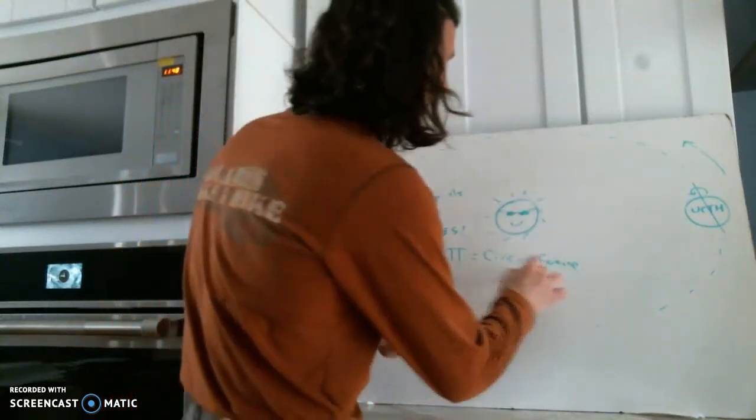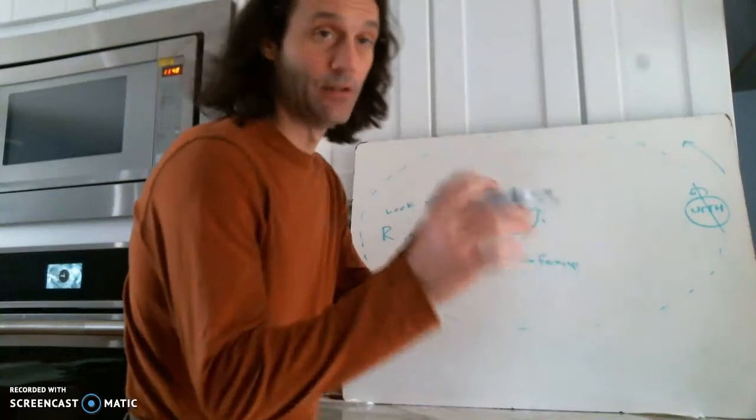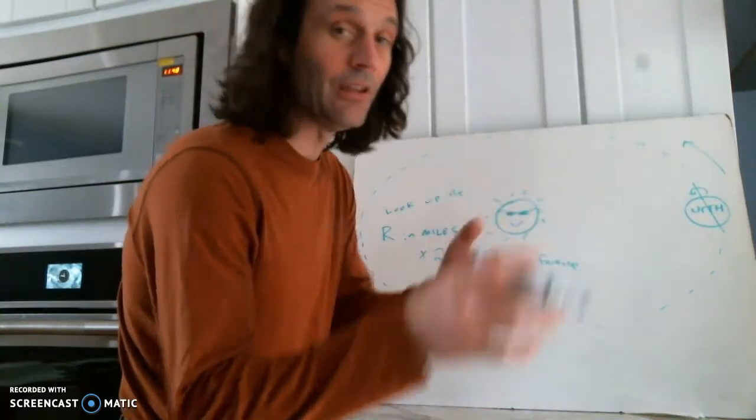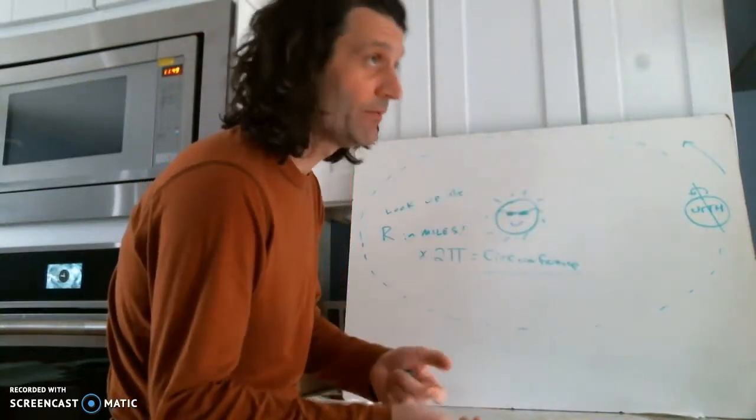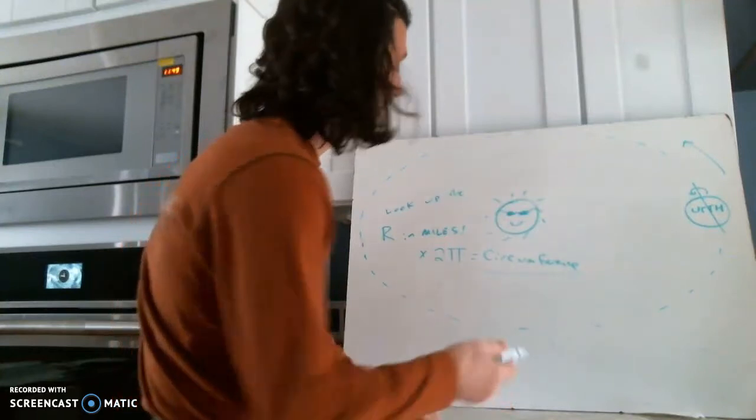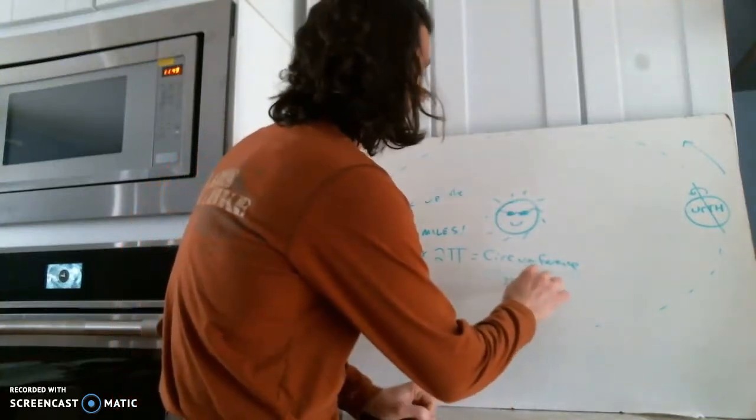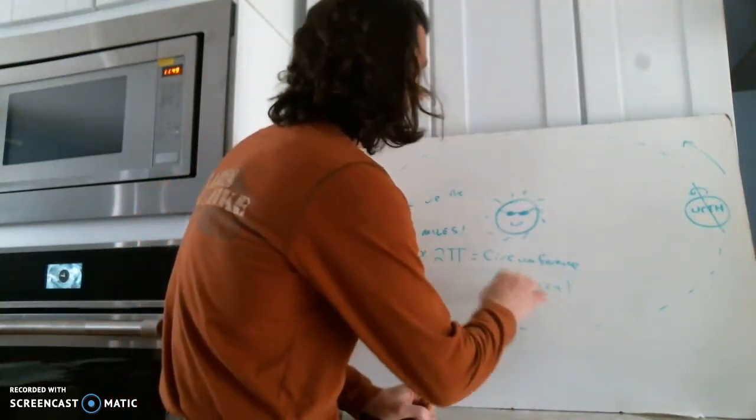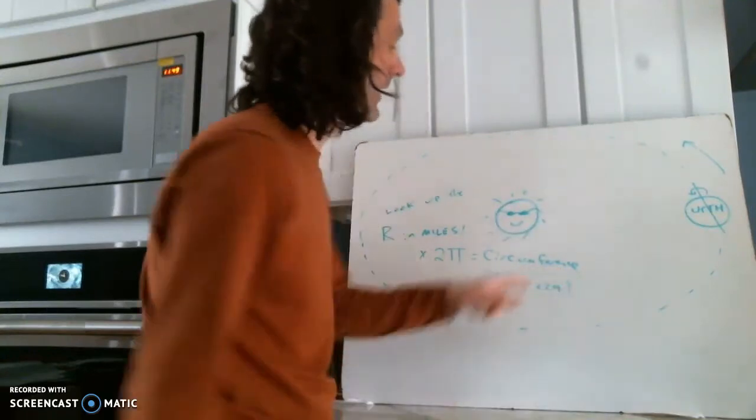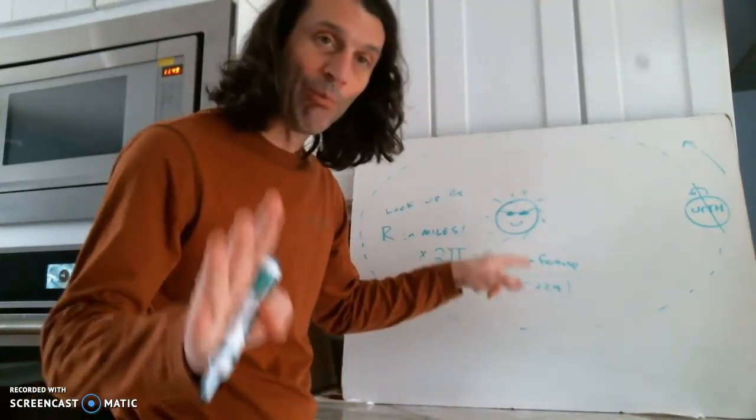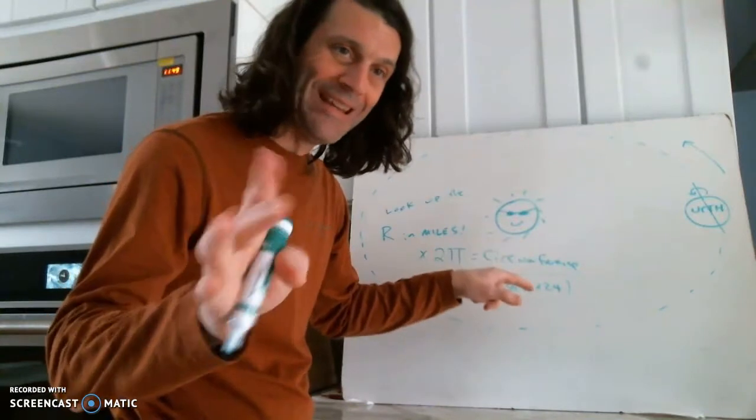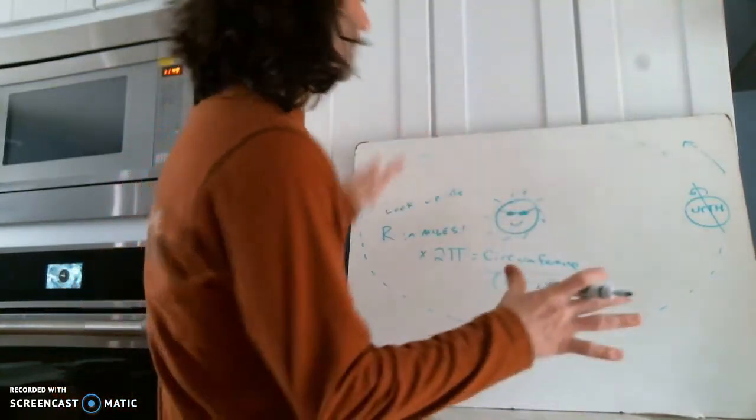Once you get that number, divide it by the number of hours in a year, which is the number of days times the number of hours. So 365 times 24, as long as that's in parentheses, you got it. Now that's the miles per hour speed that the Earth is orbiting the Sun.